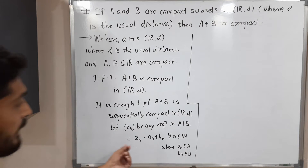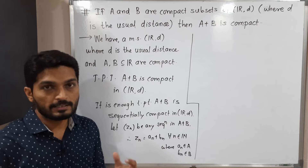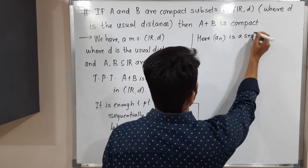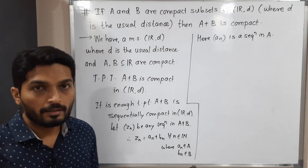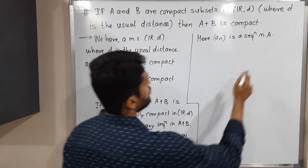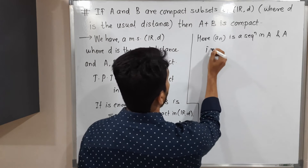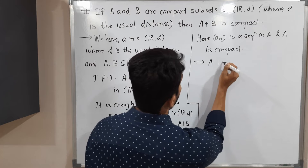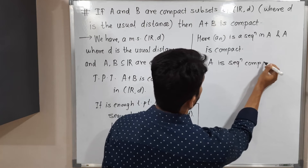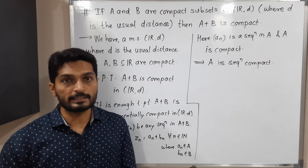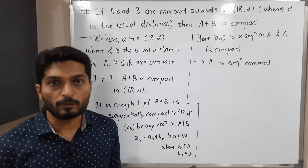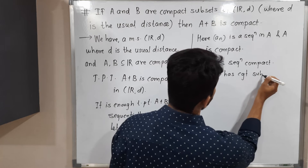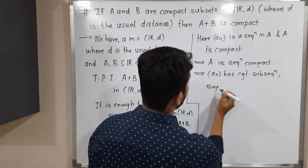Let us concentrate on the sequence aₙ first. Zn is an addition of two sequences aₙ and bₙ. Here aₙ is a sequence in A, and A is compact — this is given information. Since every compact set is sequentially compact, A is sequentially compact. Sequentially compact means every sequence has a convergent subsequence. So aₙ has a convergent subsequence, and we call it aₙₖ.